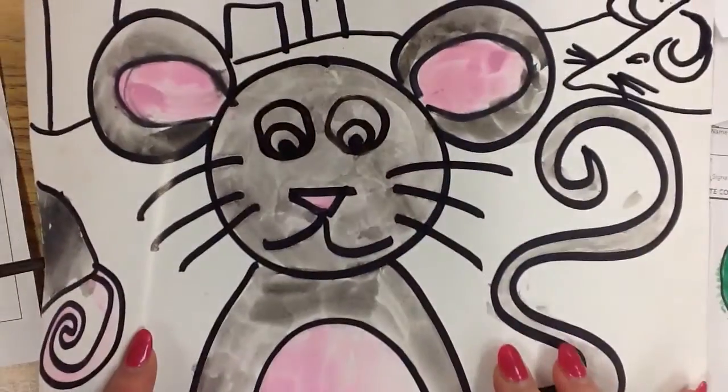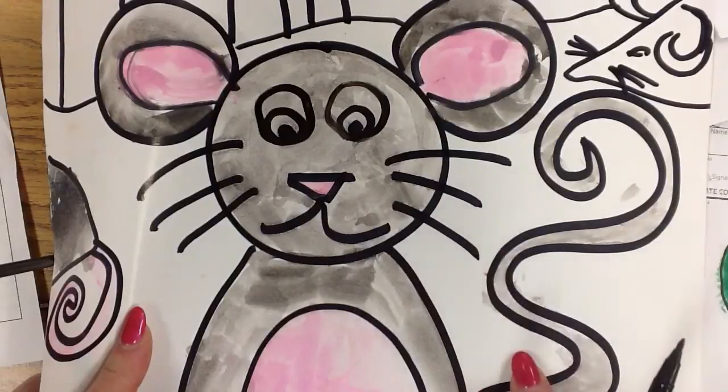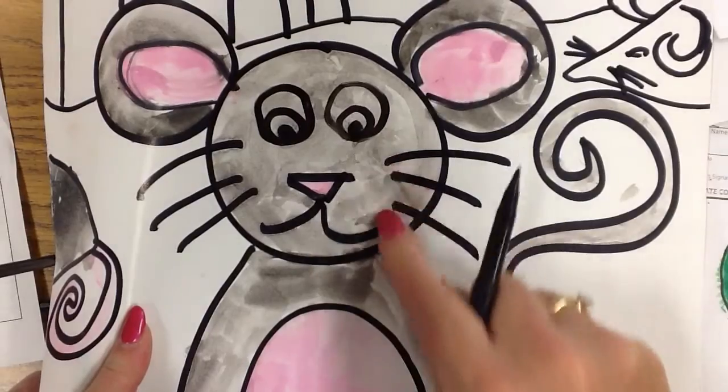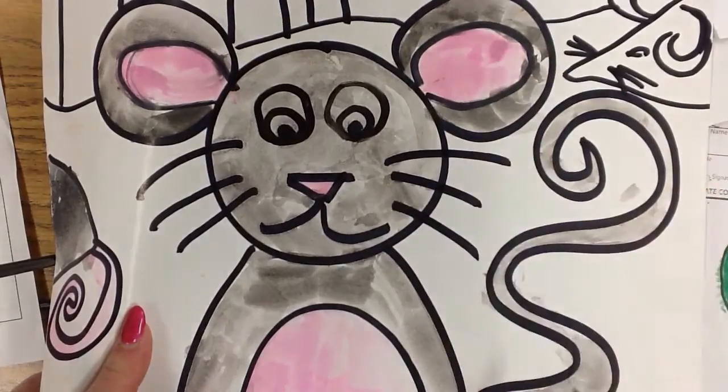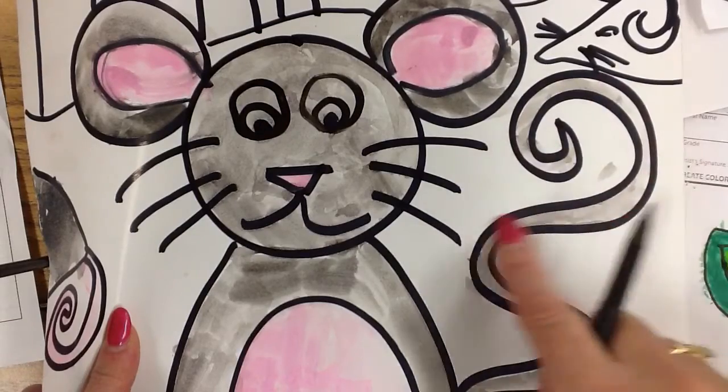What can it be? What can it be? It could be a mouse. A mouse. Look at how artistic that tail is.